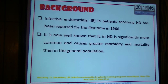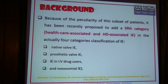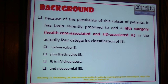Infective endocarditis in patients receiving hemodialysis has been reported for the first time in 1966, and it is now well known that infective endocarditis in hemodialysis patients is more common and causes greater morbidity and mortality than in the general population. It has been recently proposed to add a fifth category — healthcare-associated and hemodialysis-associated infective endocarditis — to the existing four categories: native valve endocarditis, prosthetic valve infective endocarditis, infective endocarditis among intravenous drug abusers, and nosocomial infective endocarditis.